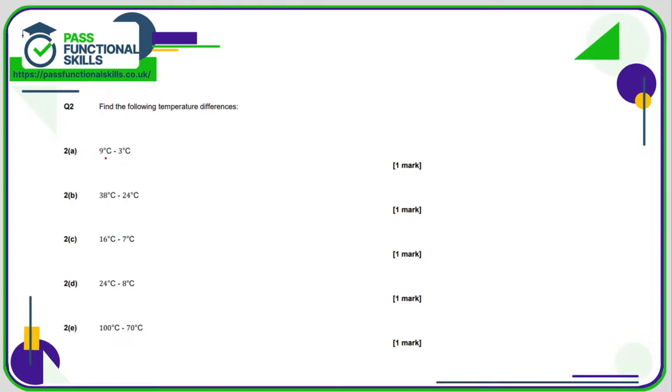What is the difference between 9 degrees and 3 degrees? Well, 9 degrees take away 3 degrees is 6 degrees Celsius.